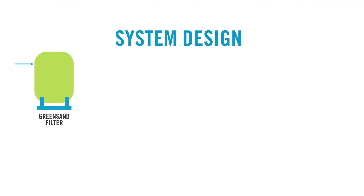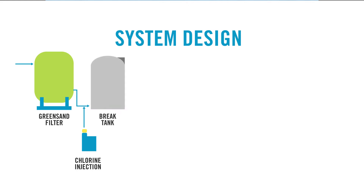Now we'll focus on the system design. The water from the well first entered a green sand filter for the removal of metals. After the green sand filter, there was a chlorine injection, which combated the biofouling that the site had experienced in their break tank. After the break tank, there was an SBS injection to reduce the chlorine, protecting the RO from oxidation damage.